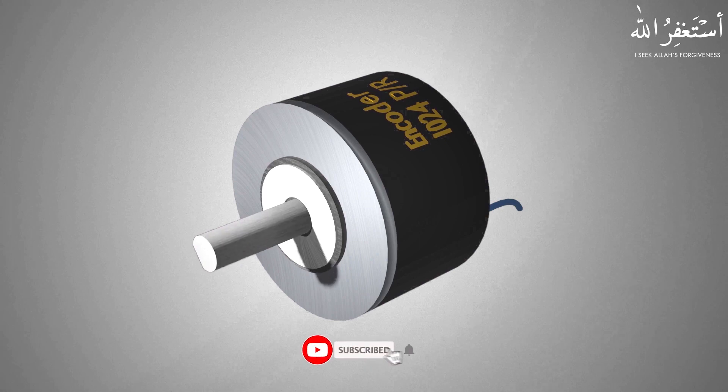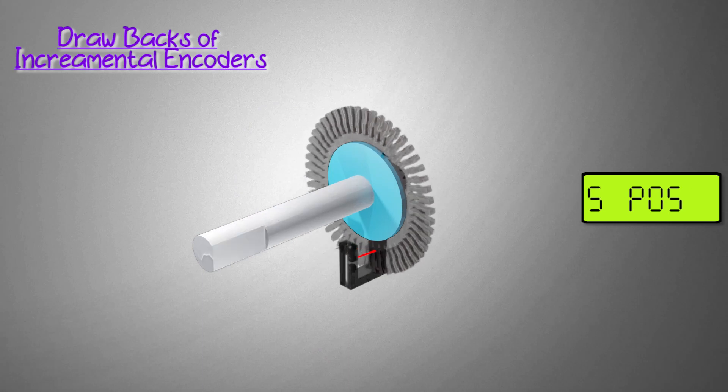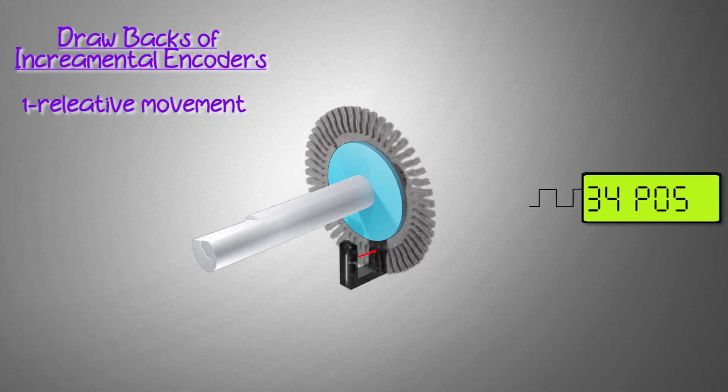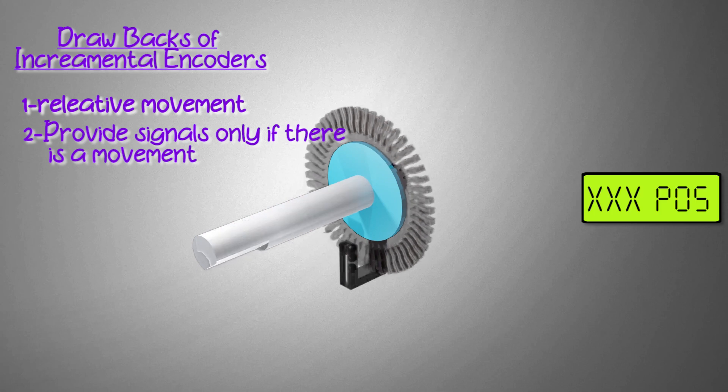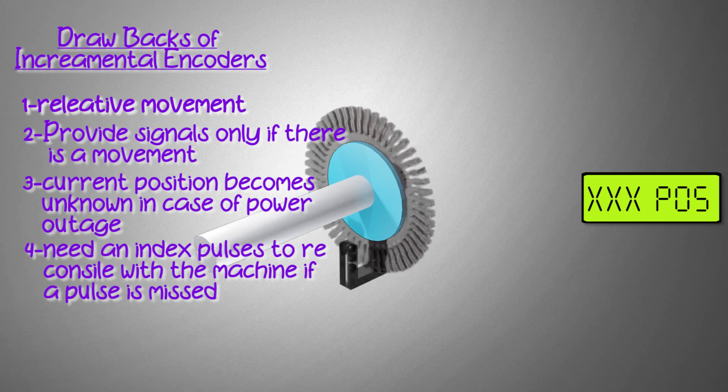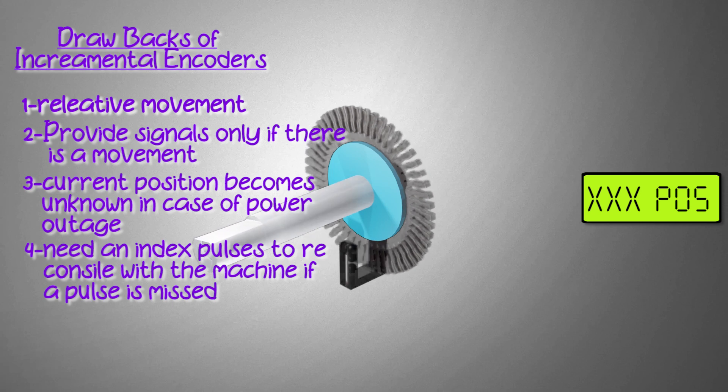Now while the information provided by the incremental encoder is incredibly useful, there are some drawbacks due to the fact that they only measure relative movement. They provide information if there is movement, and if there is a power loss for whatever reason, the current position becomes unknown. They also require constant monitoring. If there is noise in the system or the encoder pulse is missed, then we have to reset the encoder reading to reconcile with the machine operation using an index pulse.